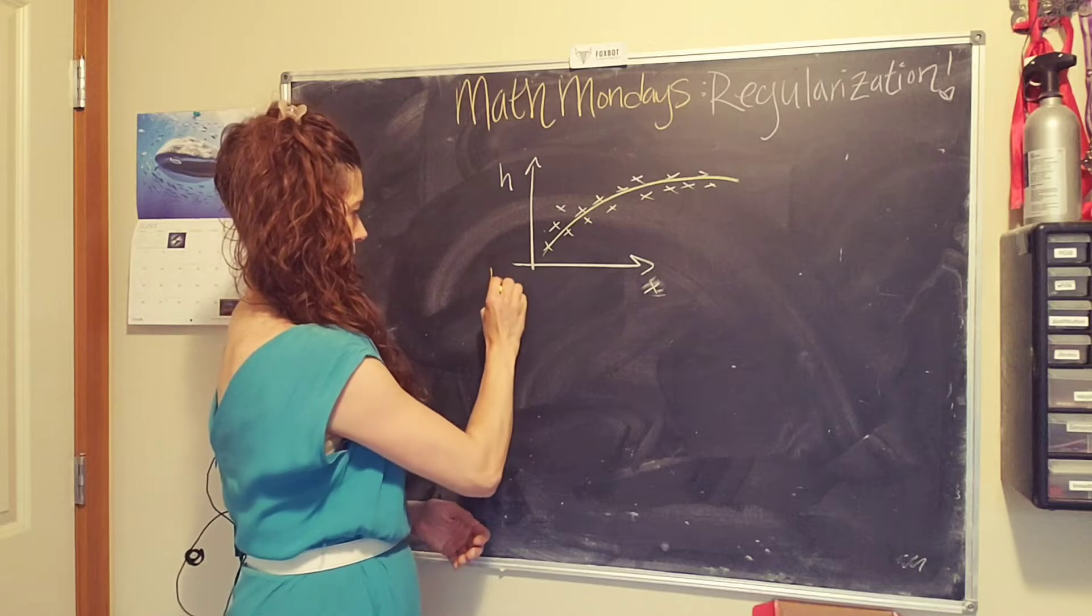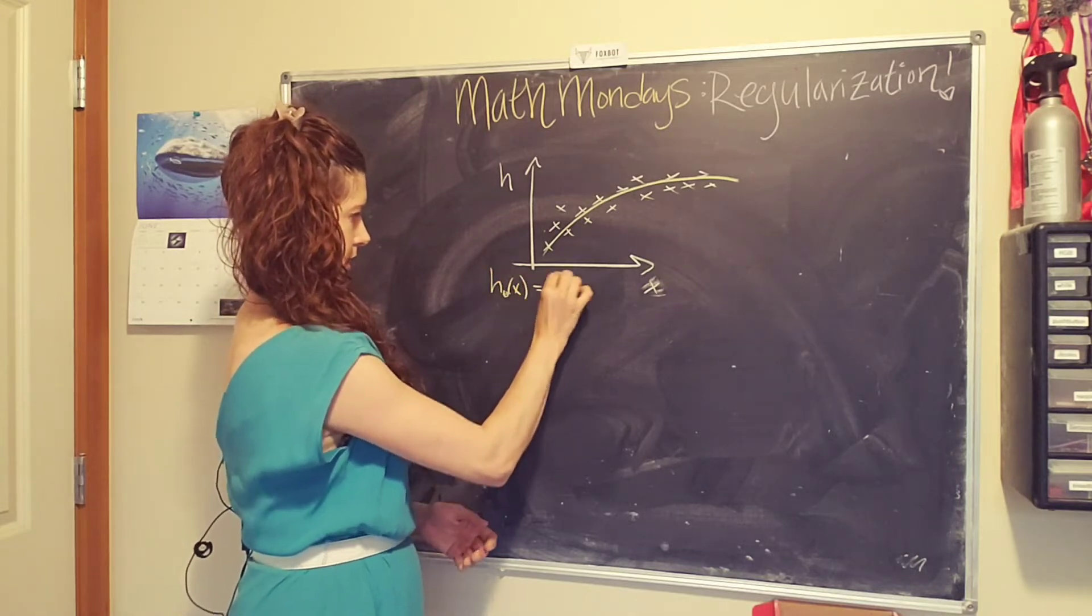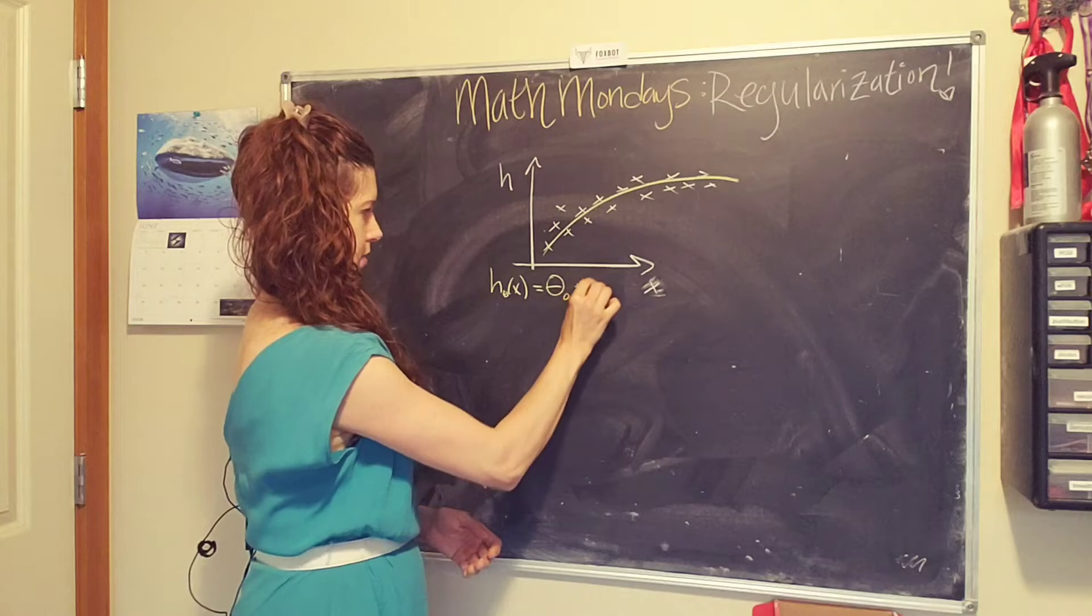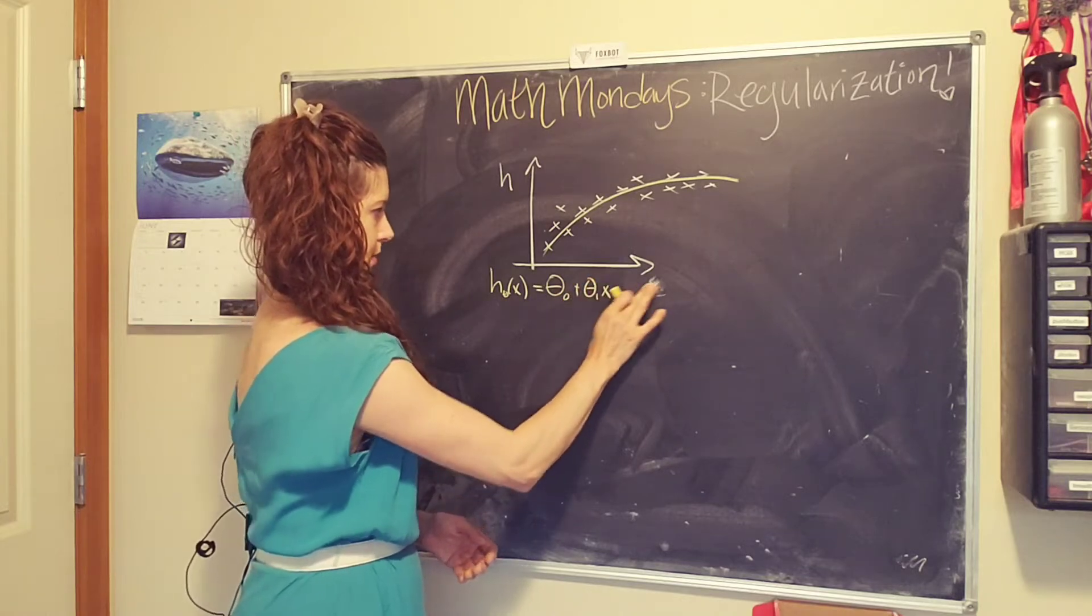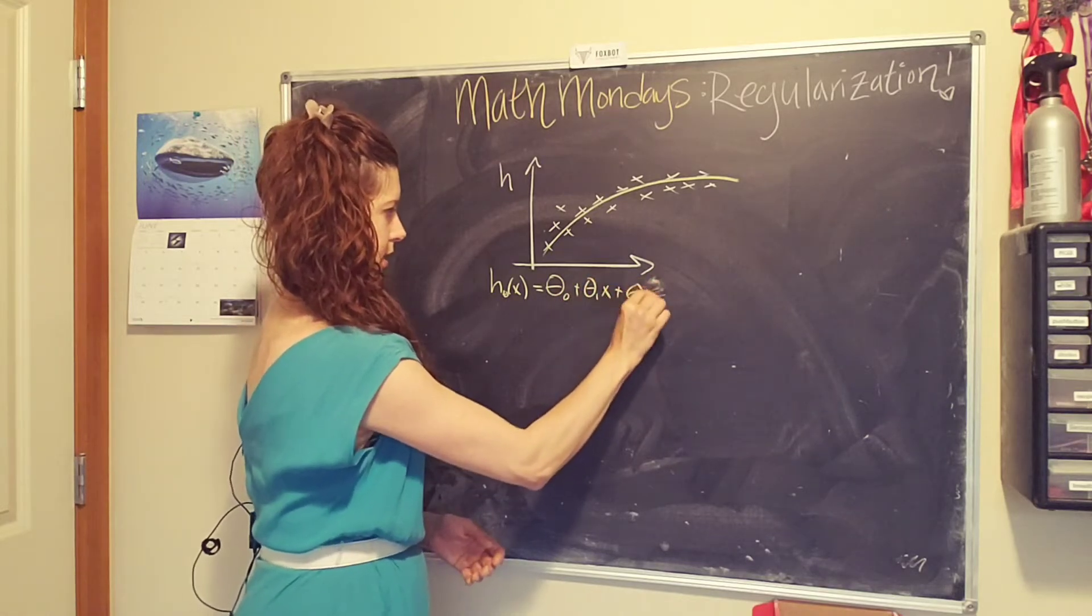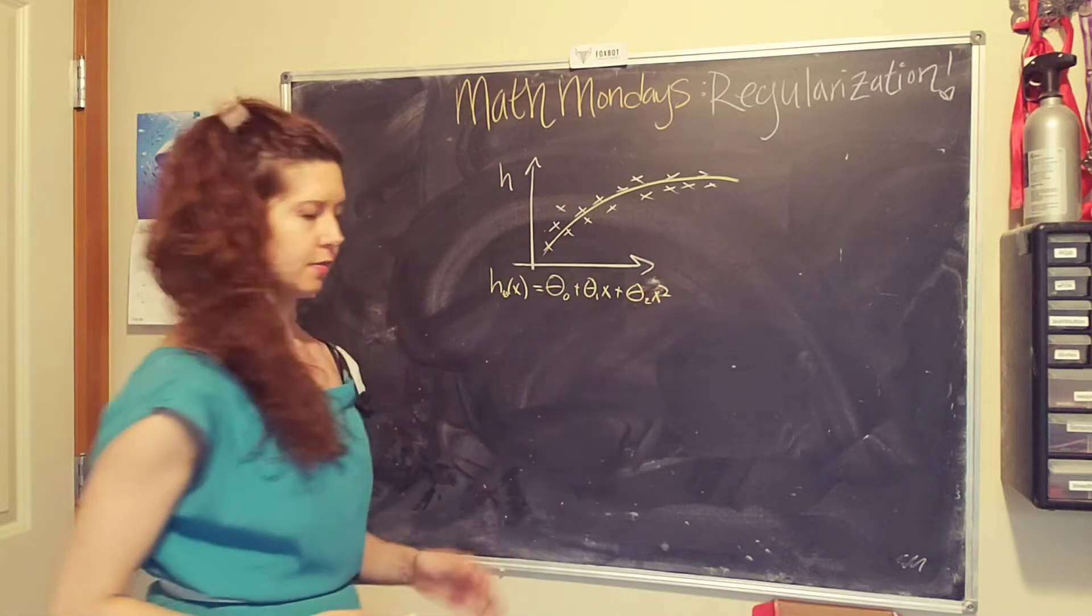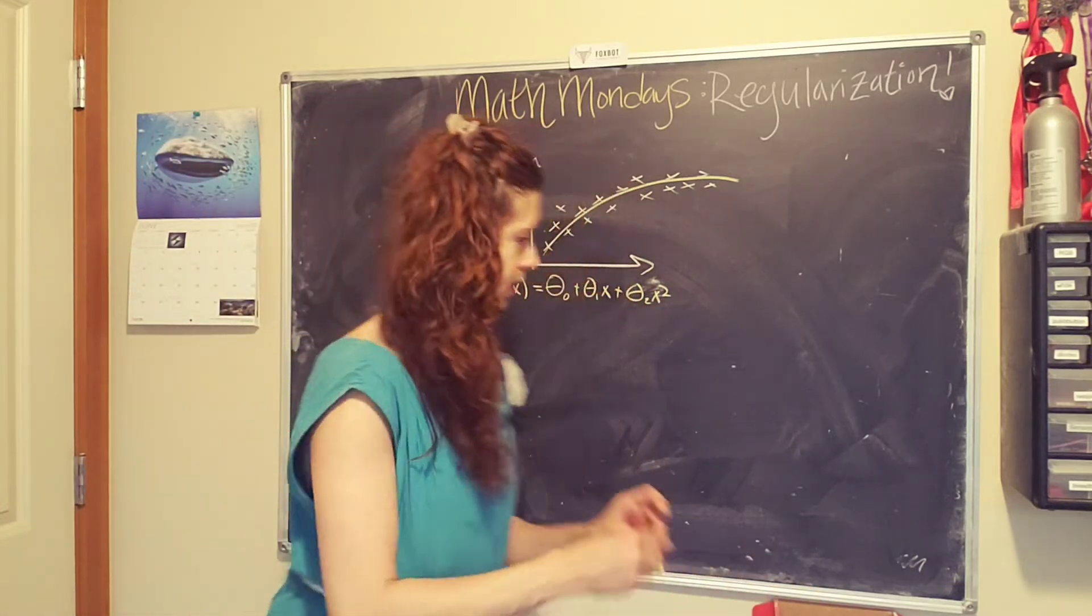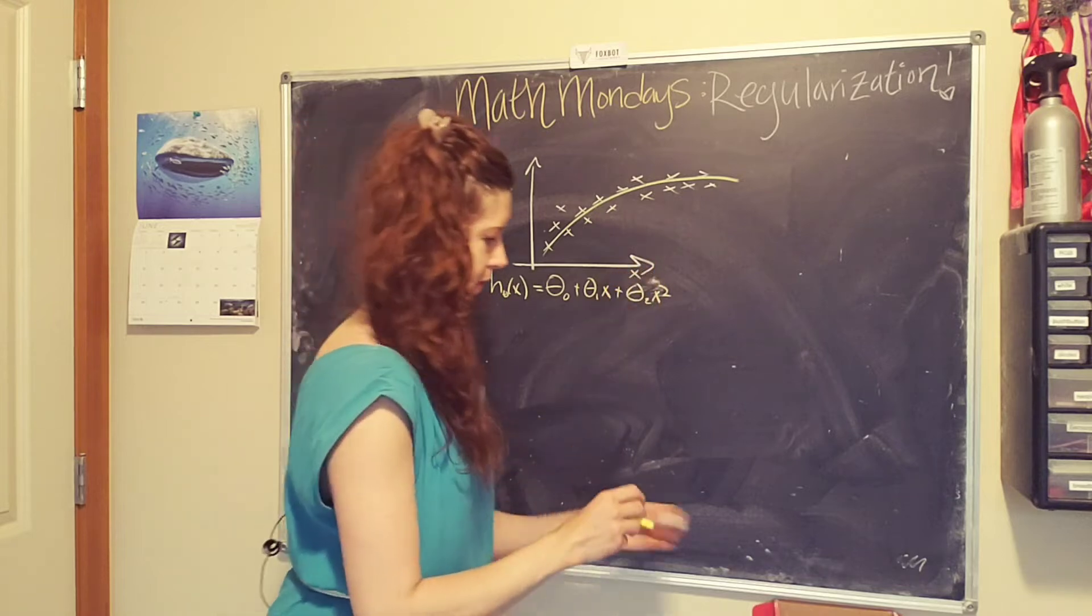h_theta of x that looks like theta_0 plus theta_1 x, I'm gonna run out of space, plus theta_2 x squared. So kind of a sideways parabola. Got a level rock axis, this is very important.